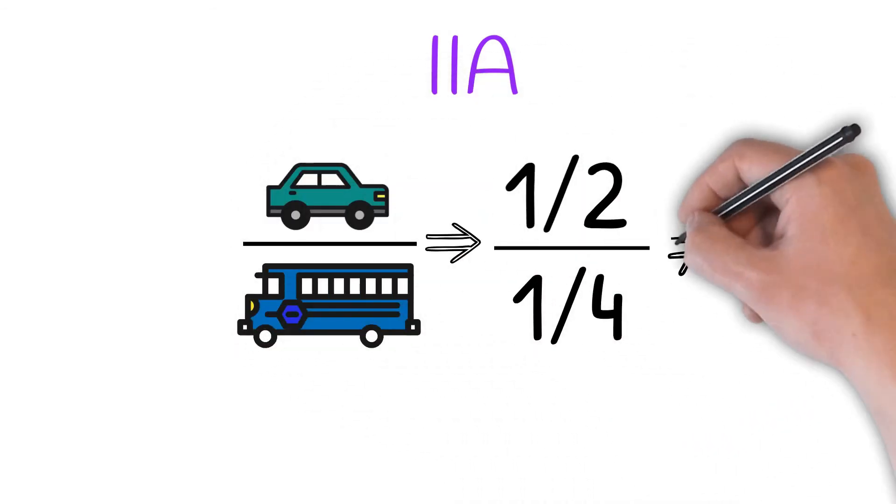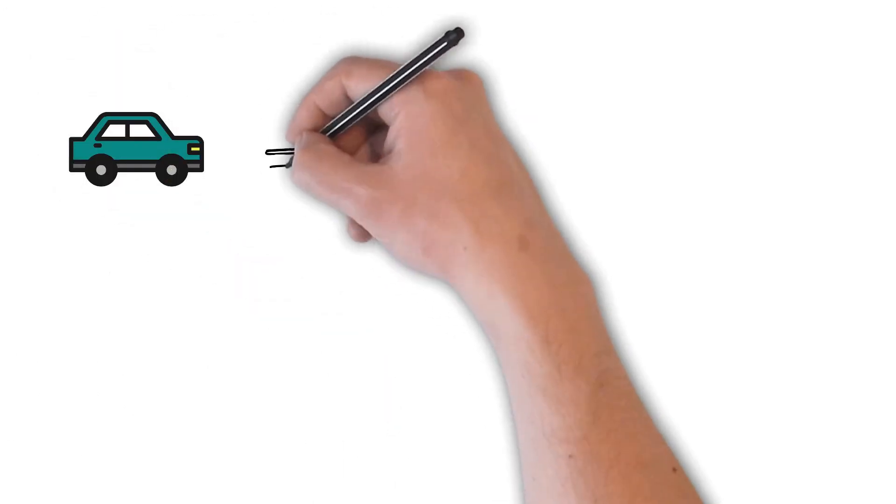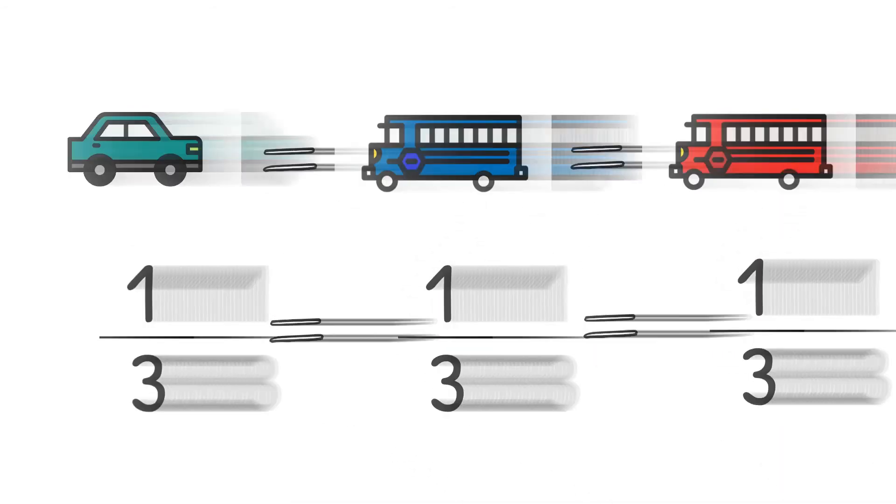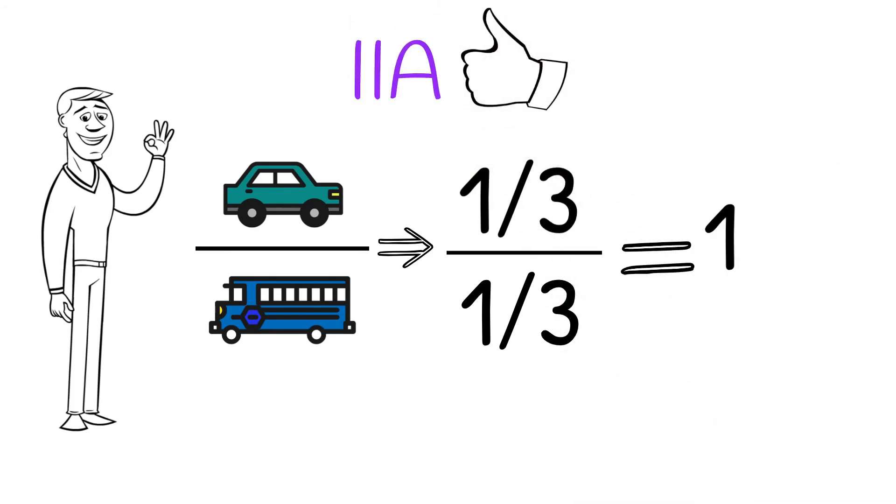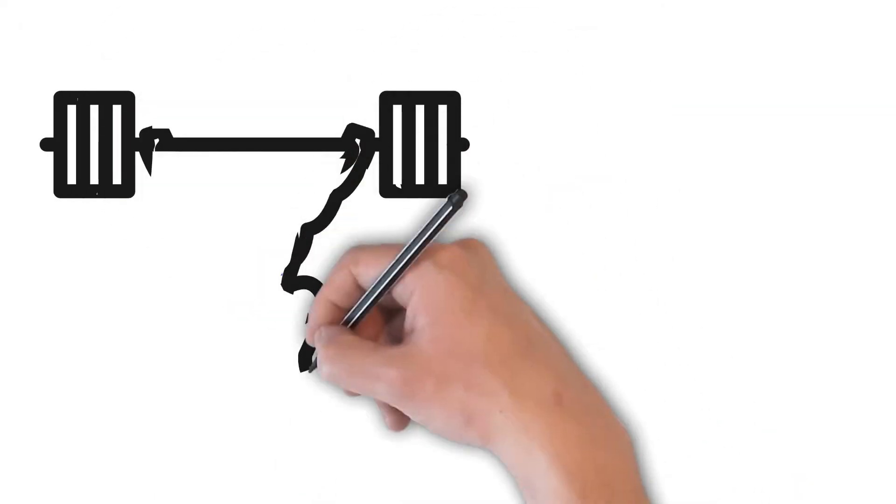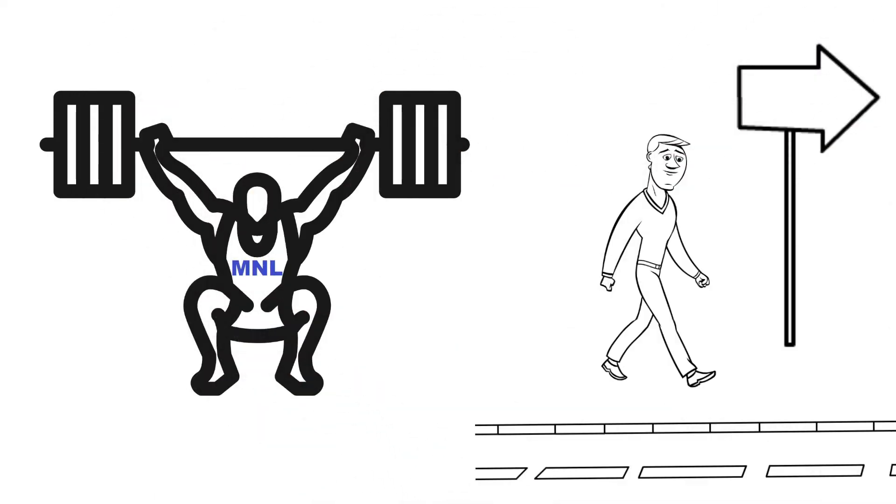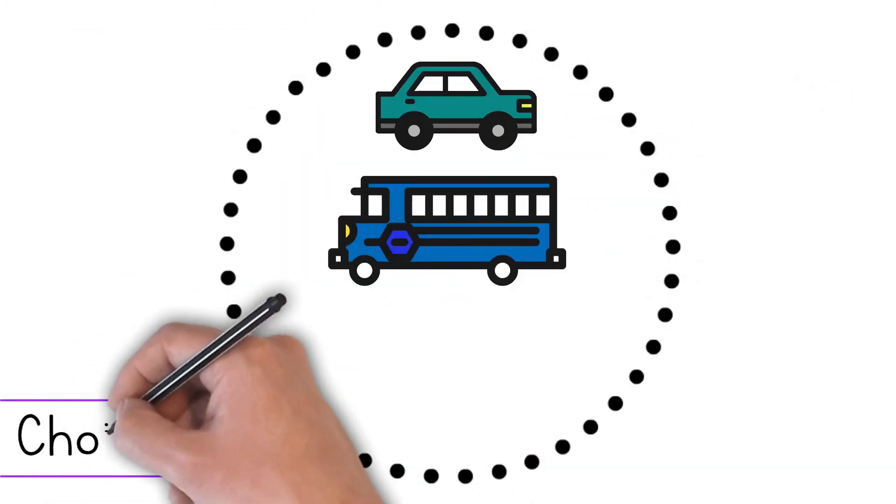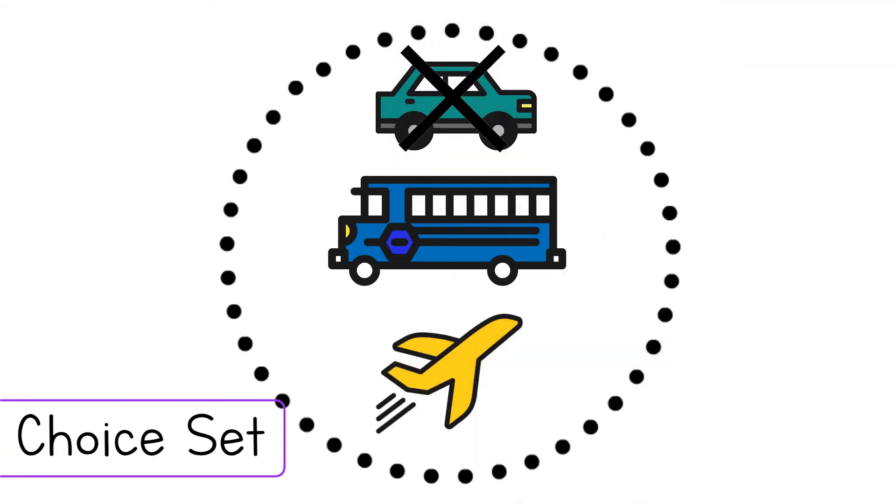To keep this result as one, Joe must change the probabilities of all the alternatives. In this way, the IIA is respected, but it no longer represents reality. Of course, this is an extreme case elaborated to show that the MNL can overestimate the probability, leading to an error. This happens when a change occurs in the choice set, either because a new option is available, one is no longer so, or maybe a change in the attributes of the alternative happens, such as the price rising.